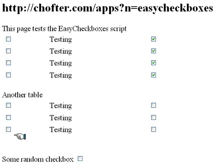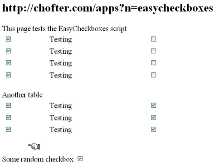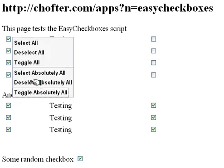You can also operate on all checkboxes on the page by using the bottom three options: Select Absolutely All, Deselect, and Toggle Absolutely All. So if we say Toggle Absolutely All, you see the values of all checkboxes on the screen have changed, and you can do this from any checkbox.